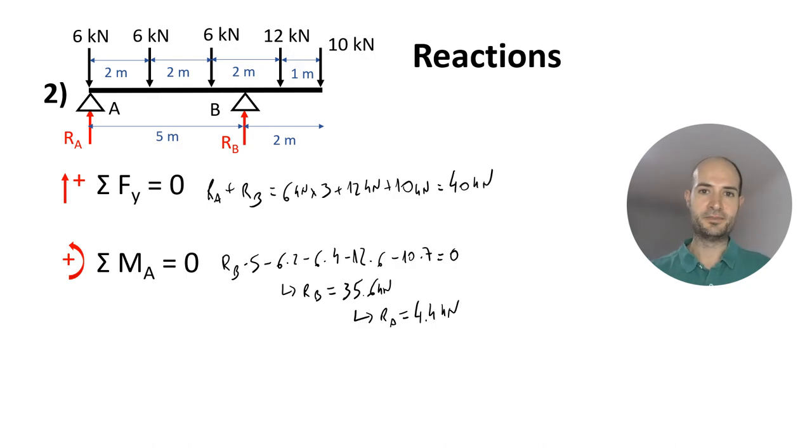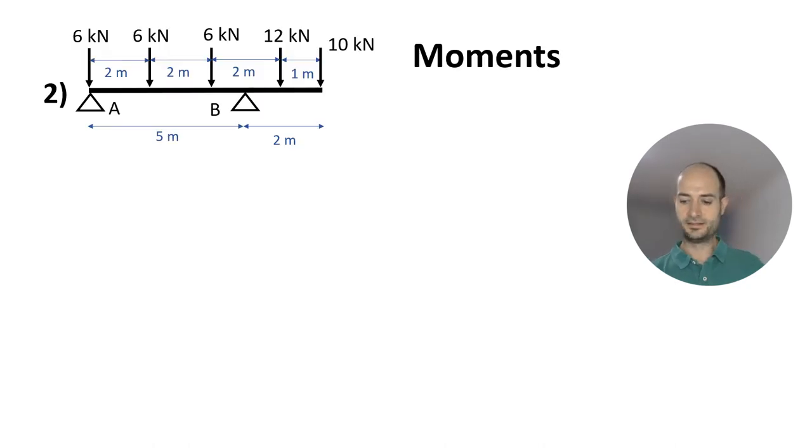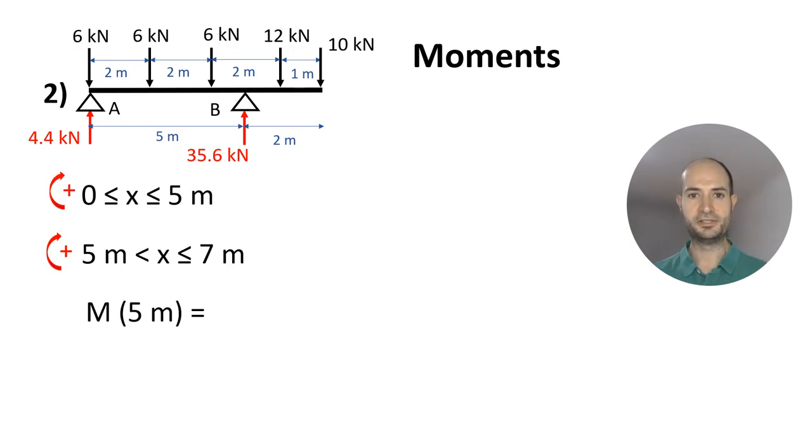Now we can calculate the momentum. We already know the reactions. Now we can calculate the momentum along the beam. As before, I will divide it from A to B and then from B to the cantilever. Starting from the left-hand side, we have the reaction: 4.4X, minus 6 times X, minus 6 times X minus 2, minus 6 times X minus 4, and that's it.